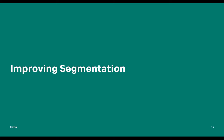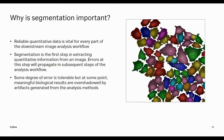Now let's go upstream in the workflow and talk about the features that go into something like a machine learning classifier. Segmentation is the first step. Reliable quantitative data is vital for every downstream step — if you have errors, they propagate through the rest of your analysis. Some degree of error is okay, but segmentation is a very challenging problem and ultimately there is no right answer.